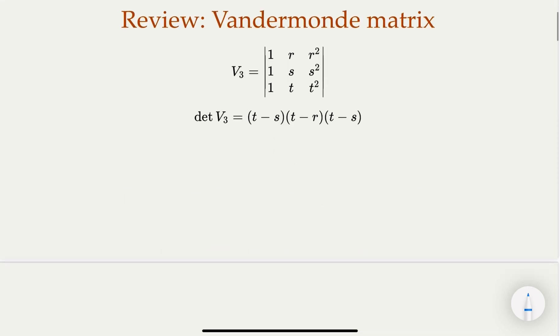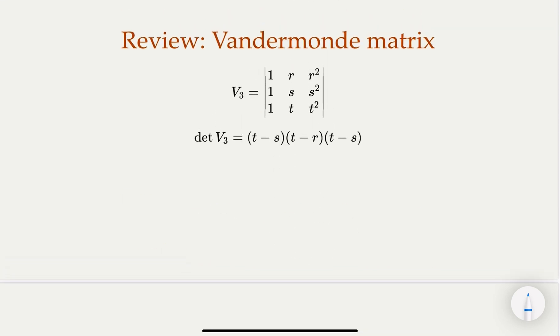A property of this matrix is that the determinant is actually the product of the differences in that order. This is just for the three dimension case; for n variables it would be similar, which we're going to cover.